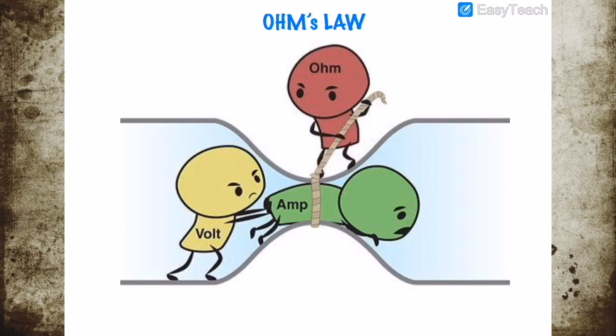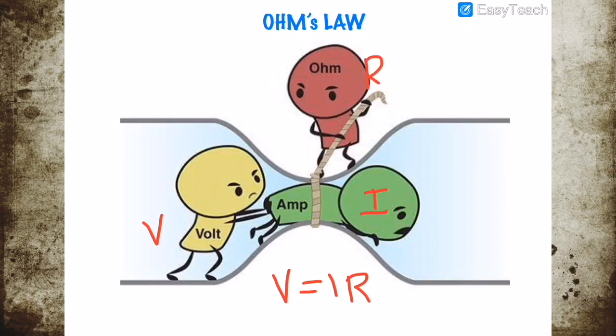Resistance is what ties together the amount of voltage you apply to the current you actually get. One equation ties voltage, current, and resistance together: V equals IR, where V is our voltage, I is current in amperes, and R is our resistance in ohms, or the Greek letter omega.